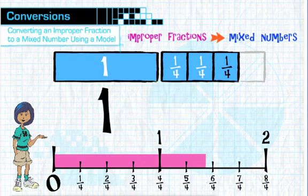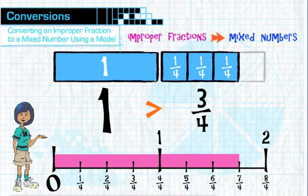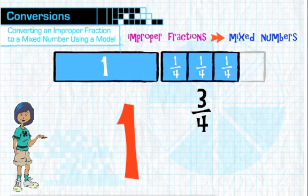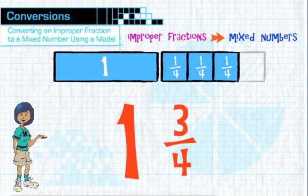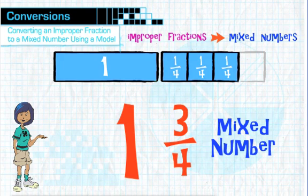The second fraction bar is three-fourths, a proper fraction, since its value is less than one. So three-fourths becomes the second part of the mixed number. When you combine the whole number, one, with the proper fraction, three-fourths, you have the mixed number one-and-three-fourths.